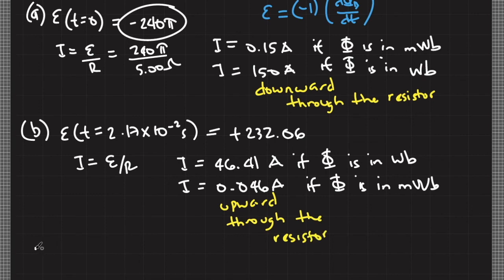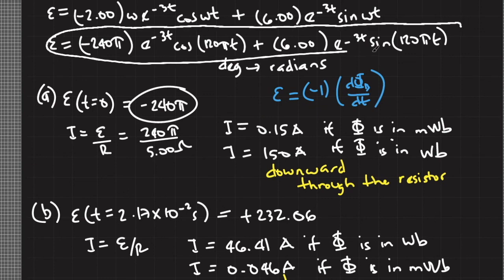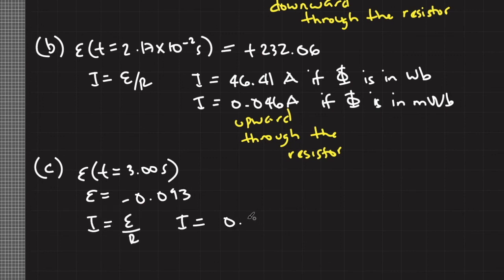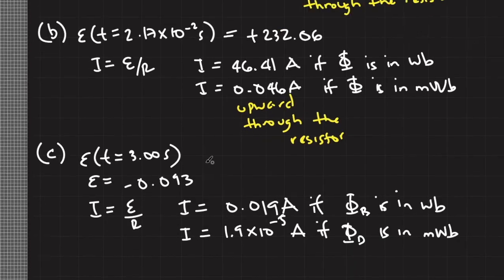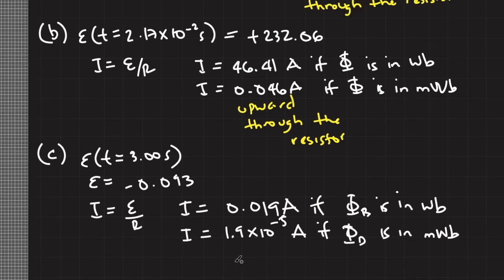For part (c) at t = 3.00 s, evaluating the expression gives EMF ≈ −0.093 millivolts. The induced current is I ≈ 0.019 mA if flux is in milliweber, or 1.9×10⁻⁵ A if in weber. Since the EMF is negative, using the same reasoning as in part (a), the magnetic flux is increasing and the current flows downward through the resistor.